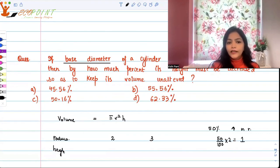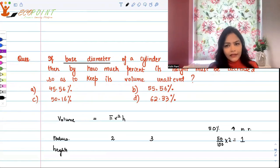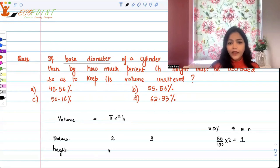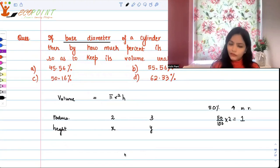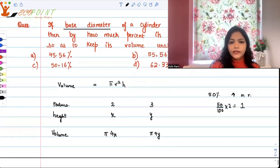For height, we have to find out the relation: if I have to keep the volume same and I'm increasing radius, then I will have to reduce height. By what percentage? Let's say height was x initially and now it is y. Volume in this case will be 4πx and here it will be 9πy.